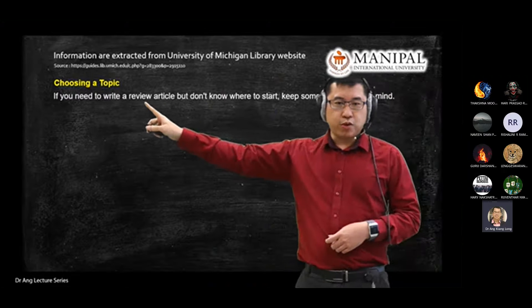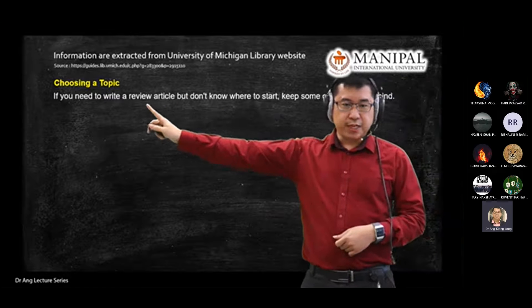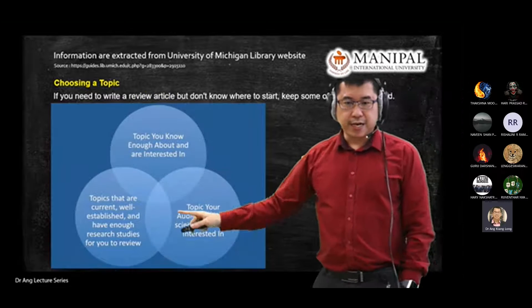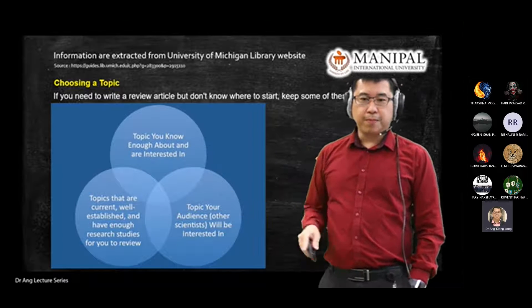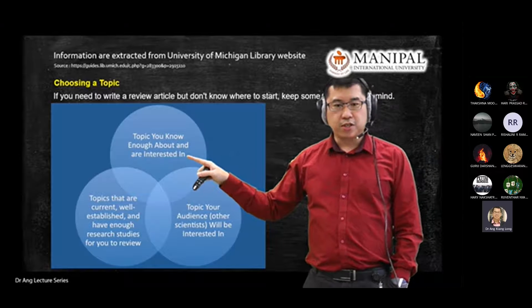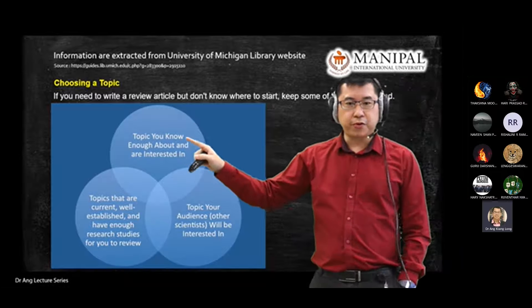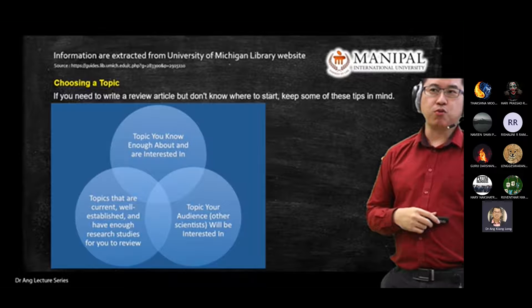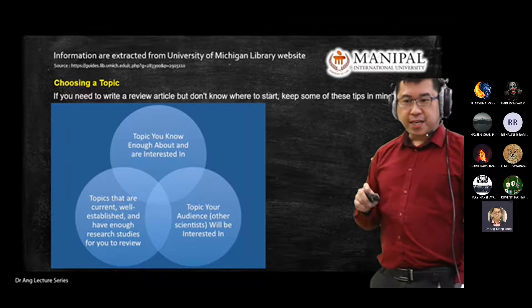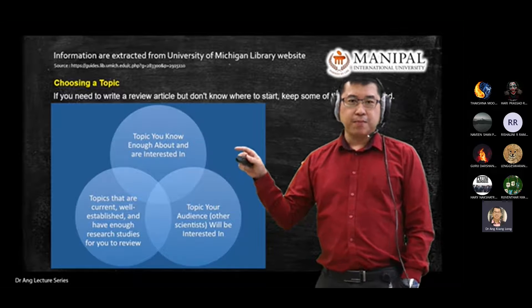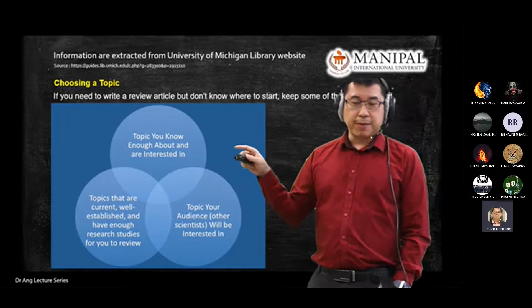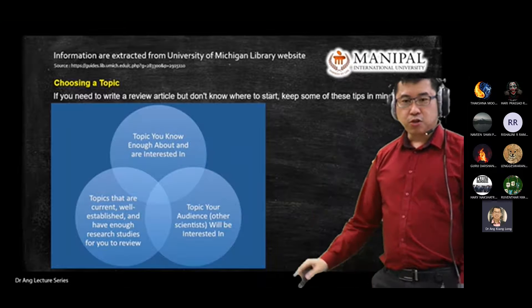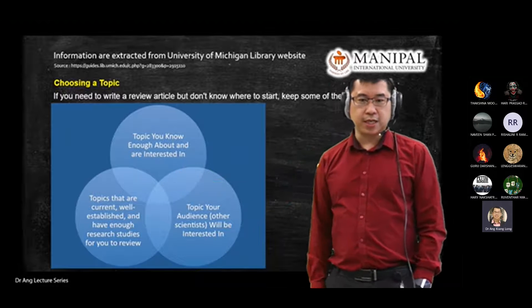Our end result is to write a review article. To write a review article you should have a topic to start with. You and your group member both discuss what you're interested in — choose a topic that both of you are interested in. Think of a problem you want to investigate or something interesting that you want to share during your presentation and when you submit your report. I want you to have fun while doing the review article.